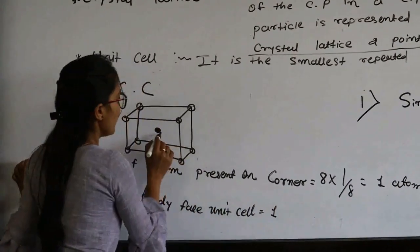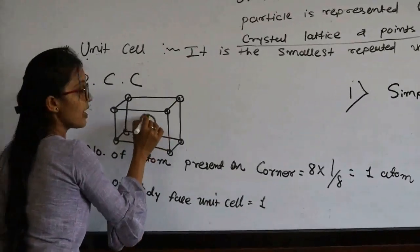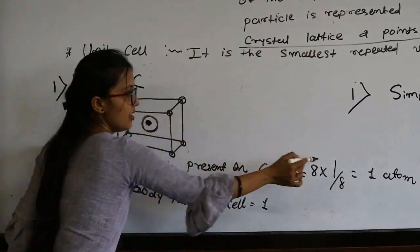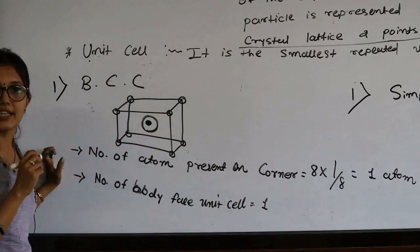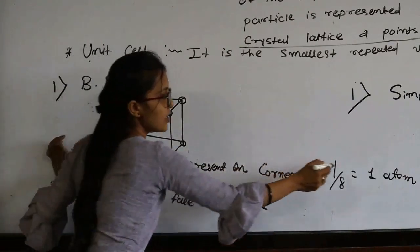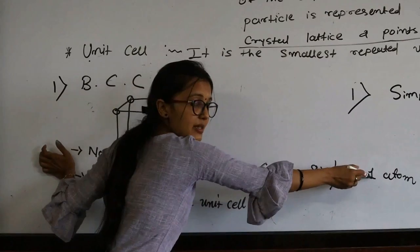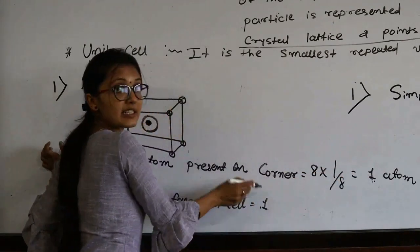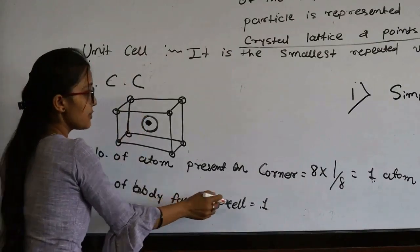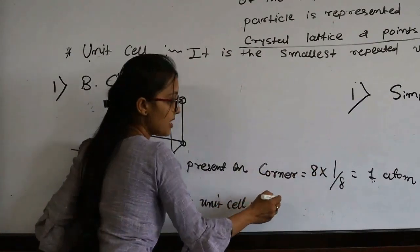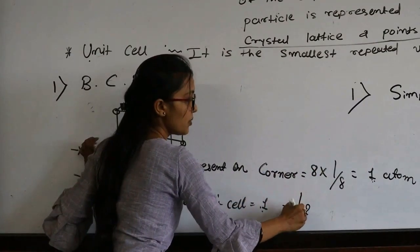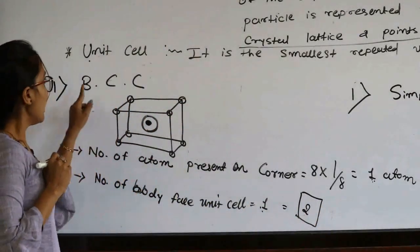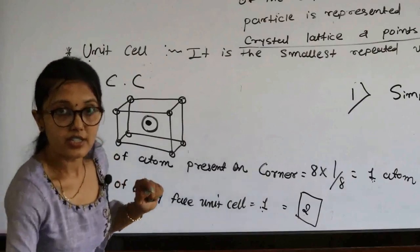The total number of atoms present in BCC: corner atoms contribute 1, and the body-center atom contributes 1. Therefore, 1 + 1 = 2 atoms in a body-centered cubic unit cell.